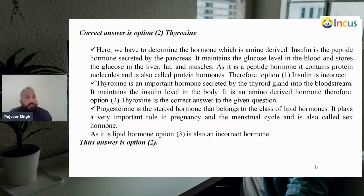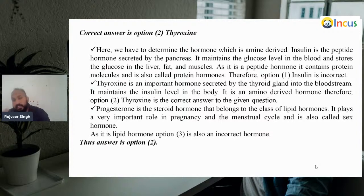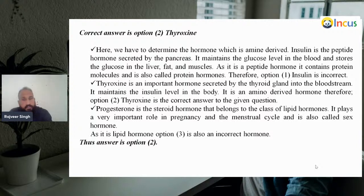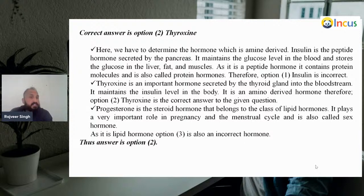Progesterone is a steroid hormone belonging to the class of lipid hormones. It plays an important role in pregnancy and the menstrual cycle and is also called a sex hormone. Thyroxine is the right answer as the amine hormone.